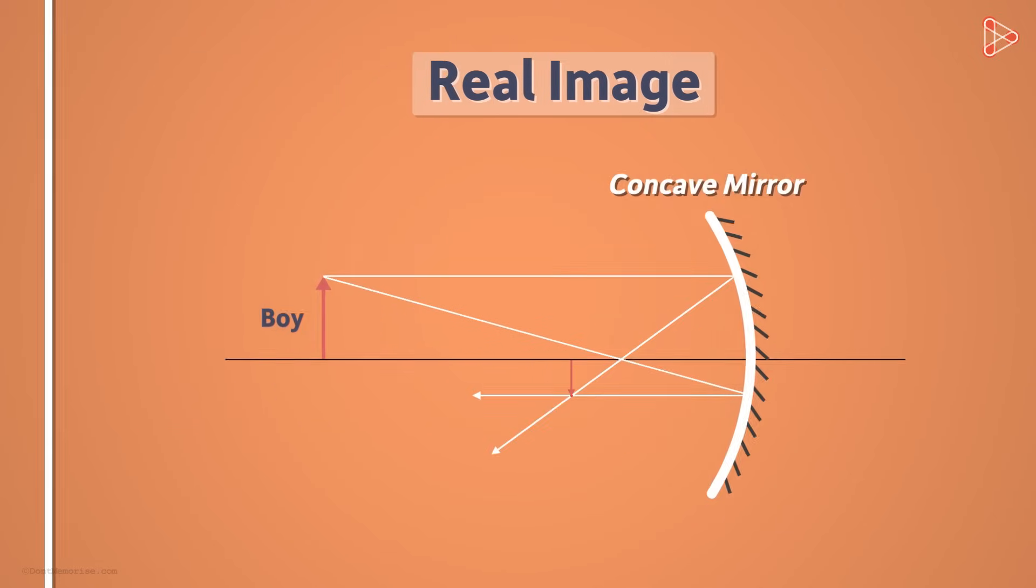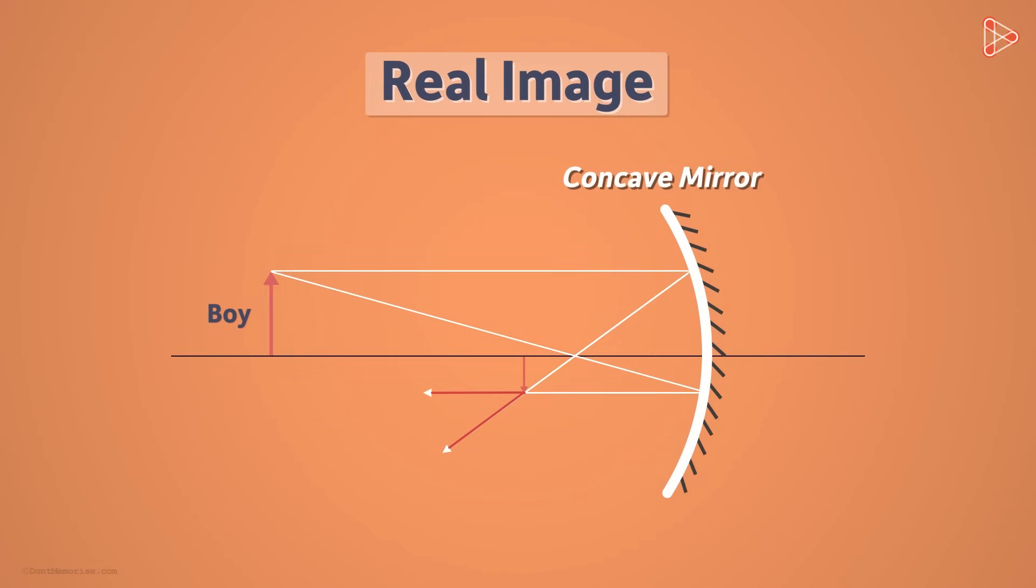And in the case of a real image, the light rays are actually diverging from the point present on the same side of the mirror. In reality, light rays indeed reach this point. Hence, we call it a real image.